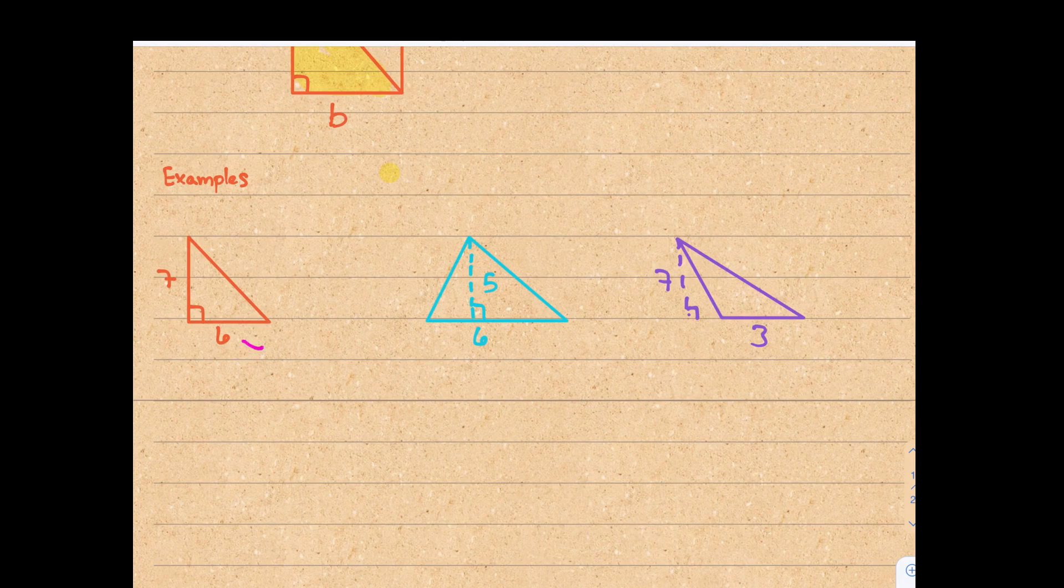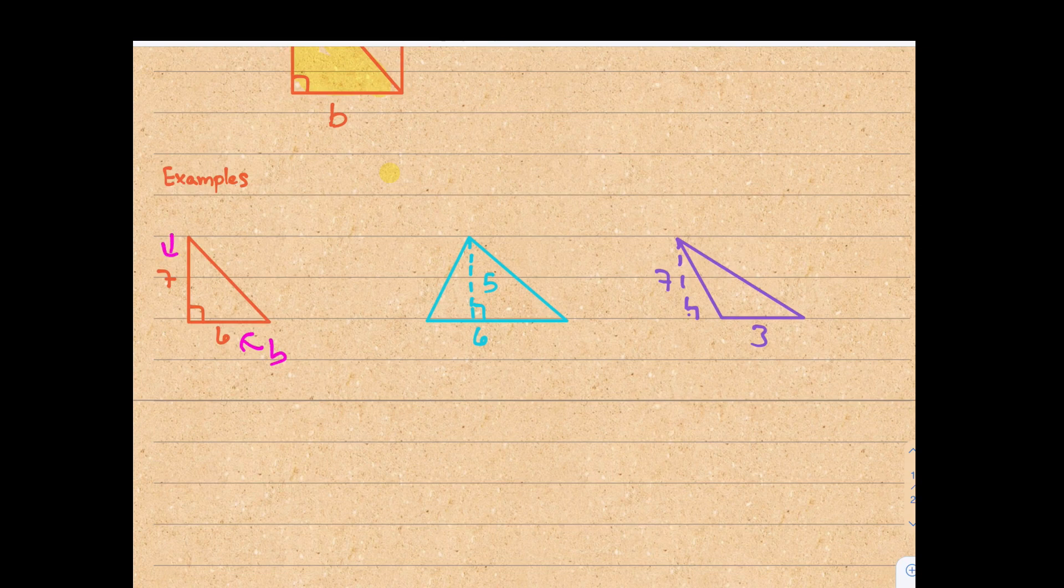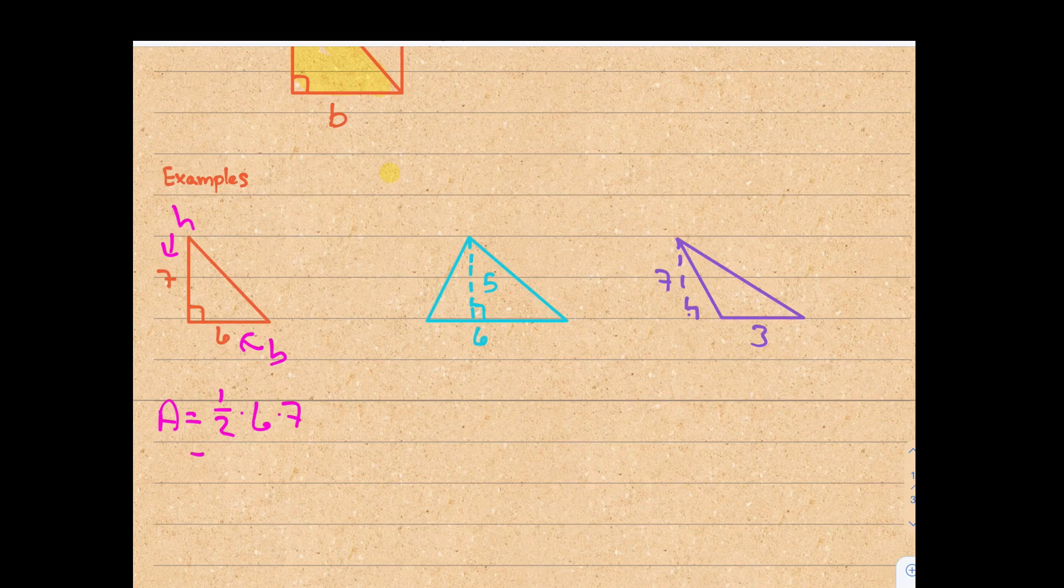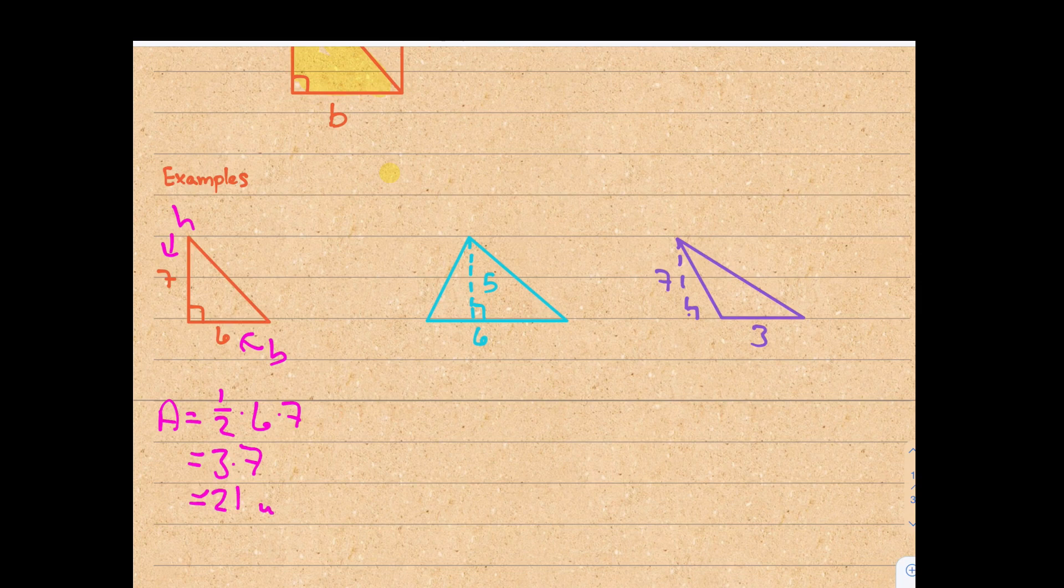So let's go through and do a couple of examples. Here is another right triangle. The base is six. The height is seven. So the area is one-half of six times seven. Which we could then simplify. A half of six is three. So it's three times seven, which is 21. 21 square units.